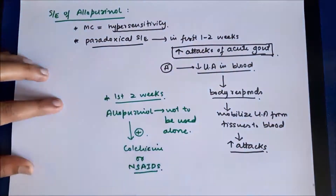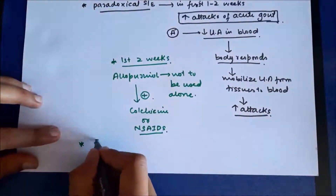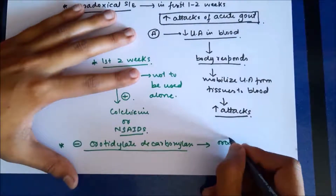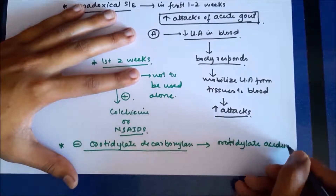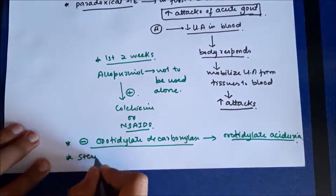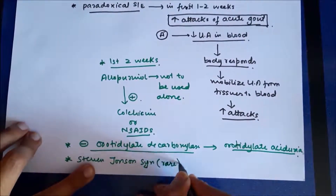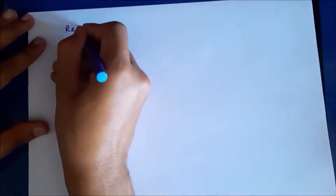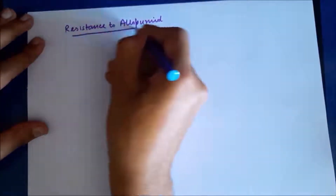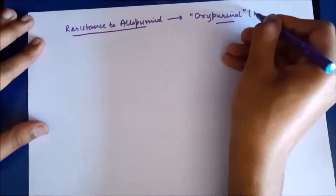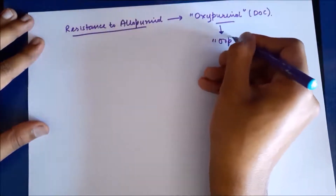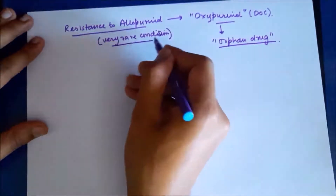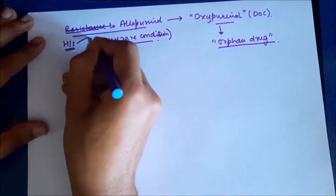Another important side effect is that allopurinol inhibits the enzyme orotidine decarboxylase, resulting in orotic aciduria. A fourth side effect is that it can cause Stevens-Johnson syndrome, although this is very rare. In cases of resistance or hypersensitivity to allopurinol, another drug called oxypurinol becomes the drug of choice — this is an example of an orphan drug, used for very rare conditions.